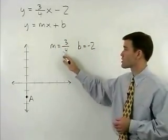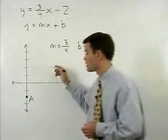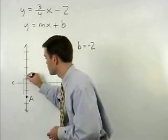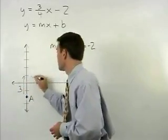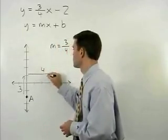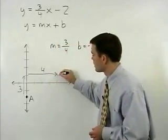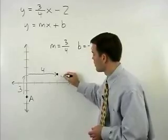From there we take our slope of three-fourths. So our rise is three and our run is four and we end up at point b.